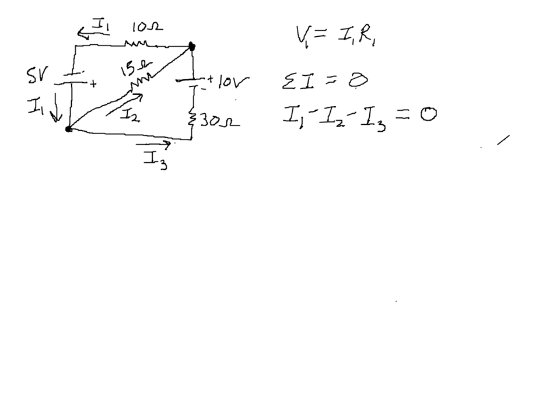The loop rule says that the sum of the voltage changes around any closed loop is equal to zero. So we need to pick a loop. First, I will pick the upper loop. Let's start right here and go around that upper triangle in a counter-clockwise direction. It really doesn't matter which way you pick. I'm going to pick that way.